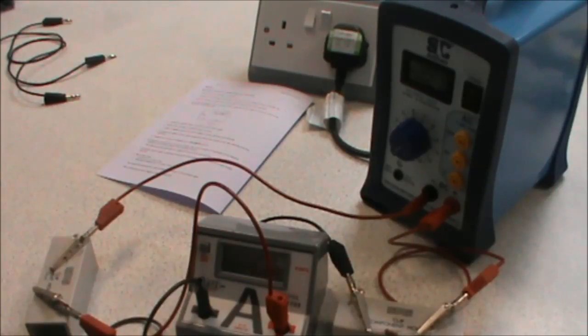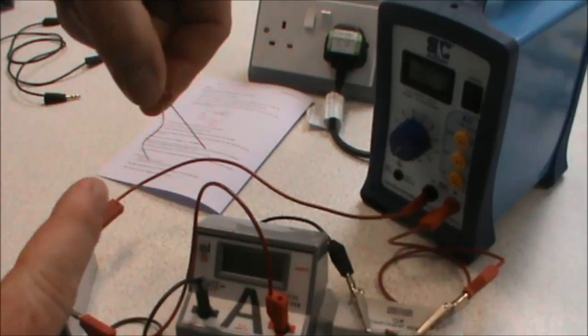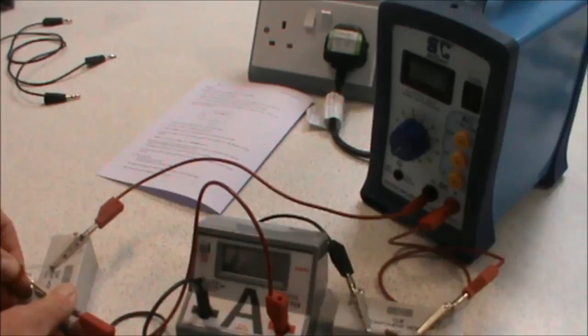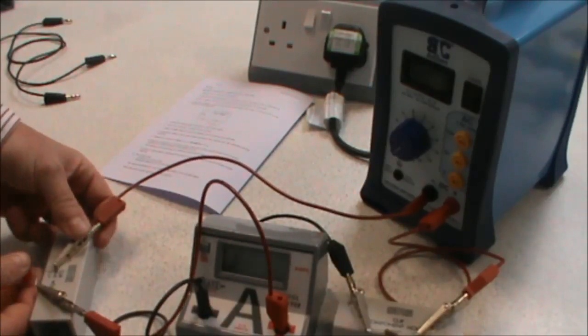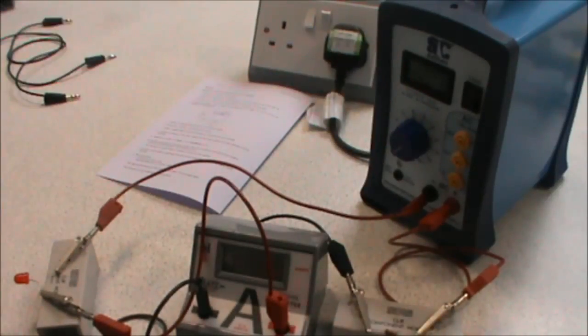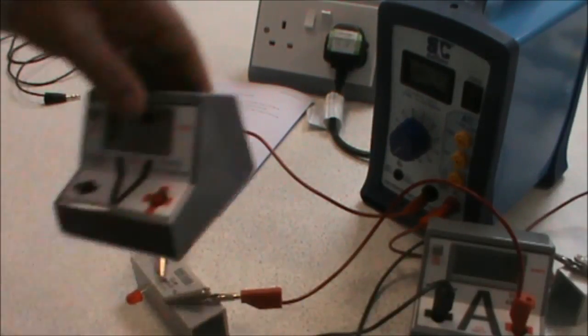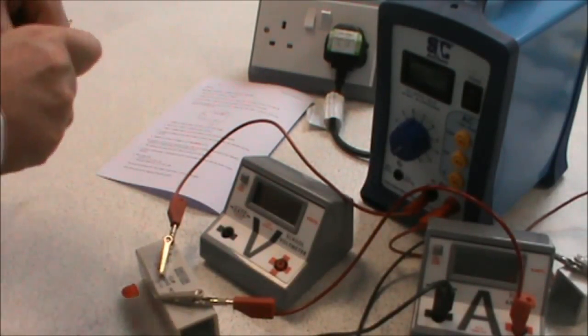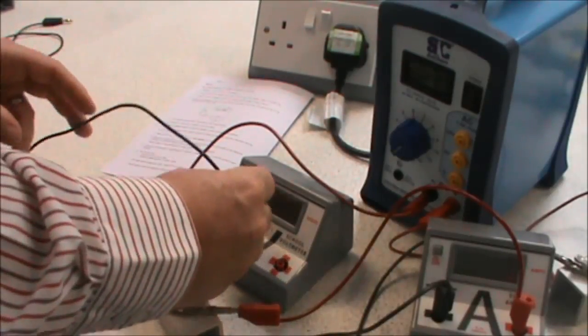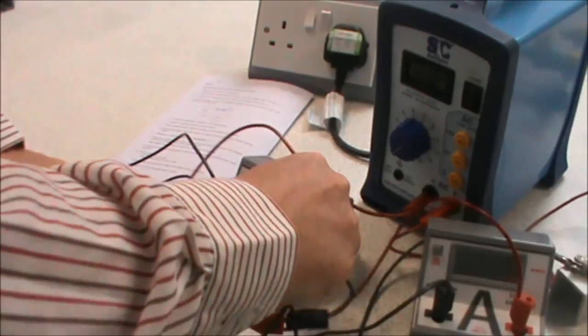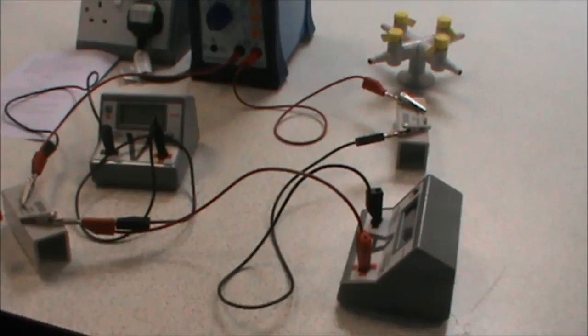We connect our LED into our component holder making sure that the long leg, that's the one that we have just bent, is connected on the positive side of our circuit. And then we connect back up to our power supply. We now want to connect our voltmeter in parallel.